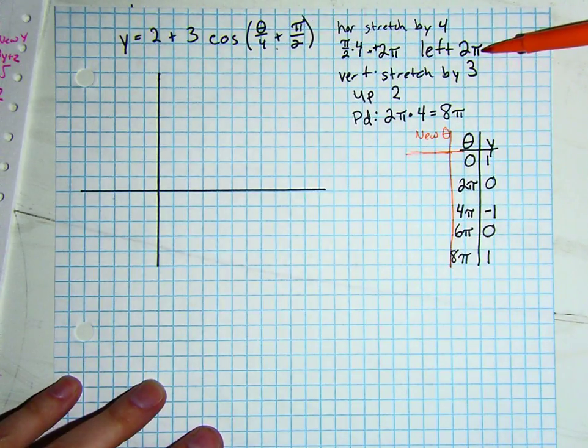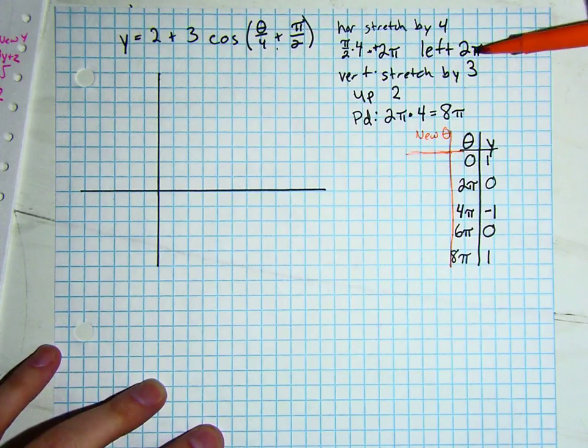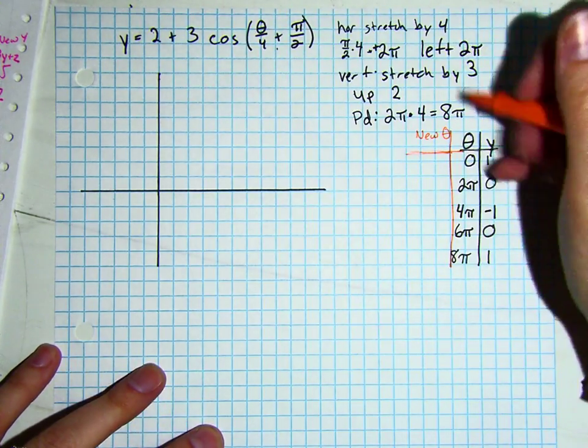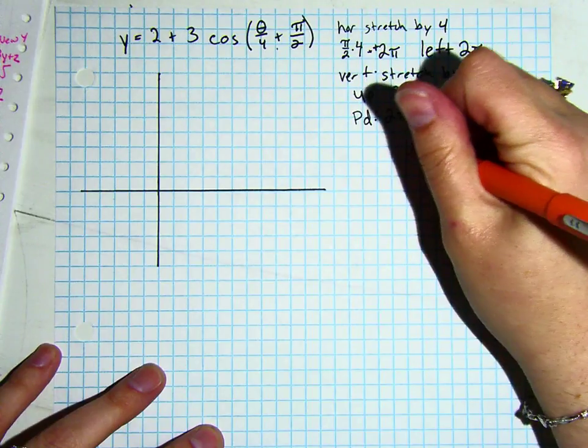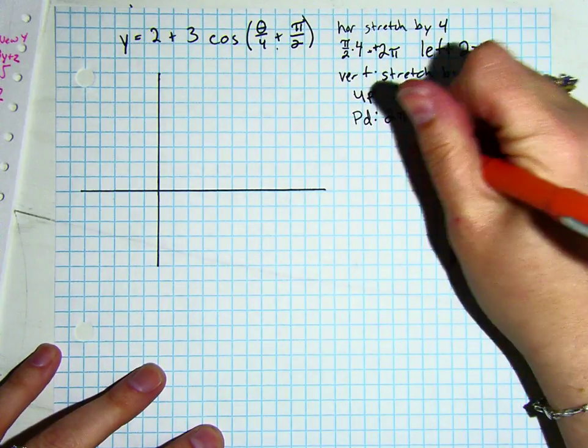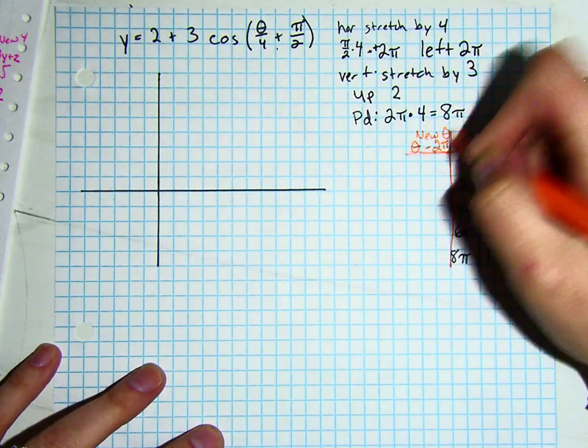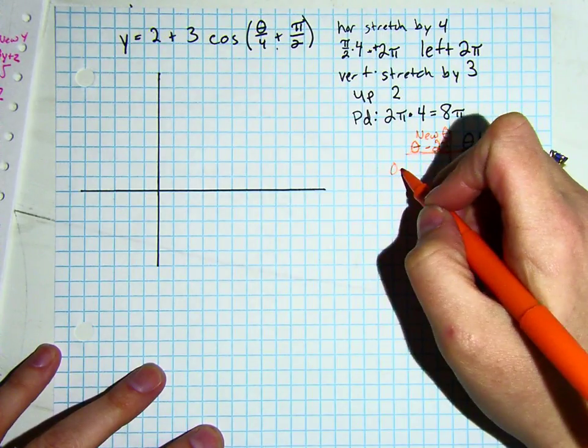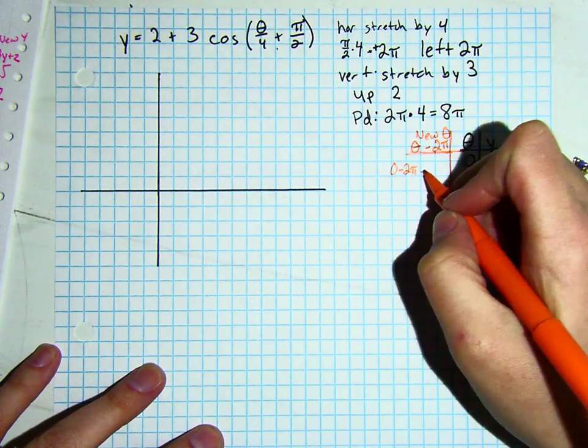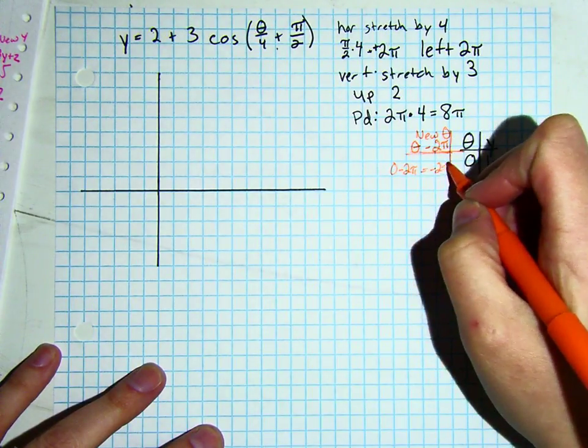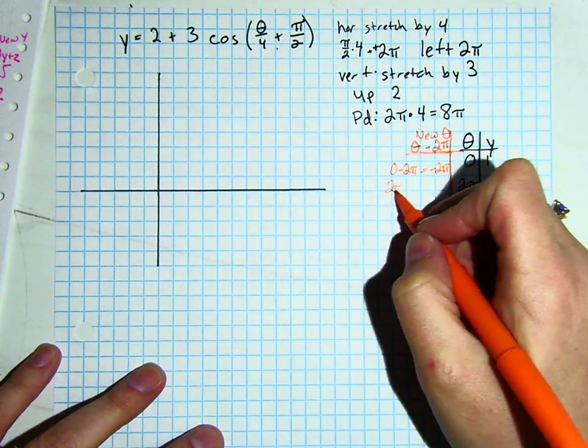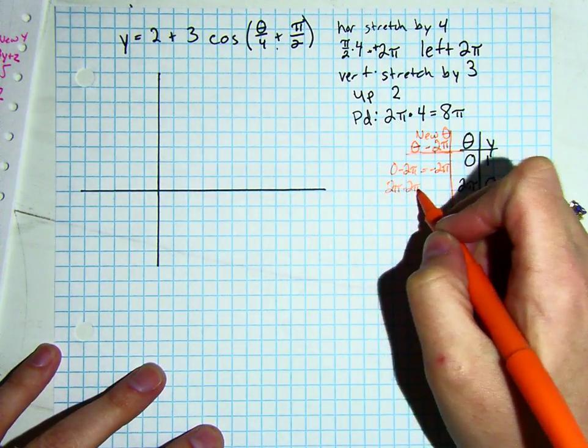On a number line, when you think left, you normally think of subtraction. So we're going to take theta and subtract 2 pi from our old thetas. So I have 0 minus 2 pi, which is negative 2 pi. I have 2 pi minus 2 pi, which is equal to 0.